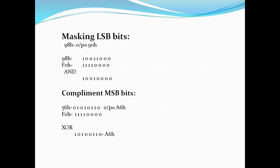The second example is complementing the MSB part of a given number — making zeros into ones and ones into zeros for only the MSB part, while the LSB part remains the same. Taking 56h as the number — its binary equivalent is 0101 0110. The expected output is A6h (since the complement of 5 is A). Applying XOR with F0h gives 1010 0110, which is A6h — the correct answer.